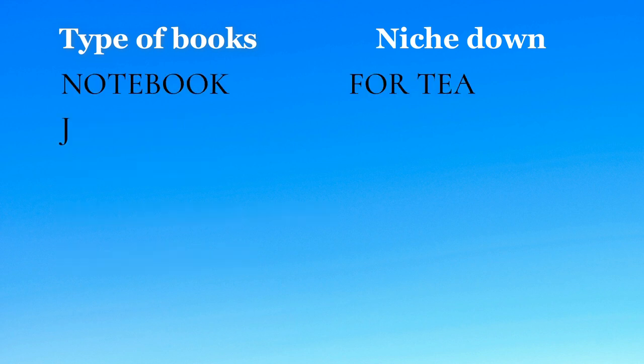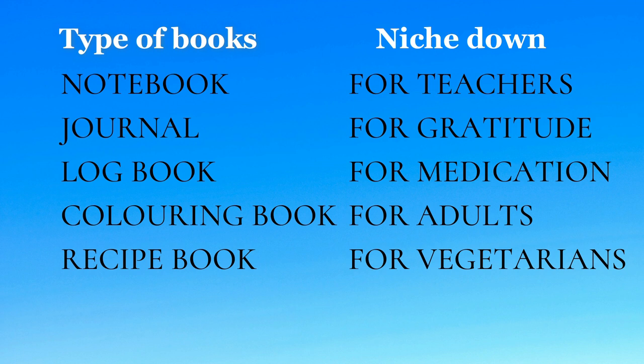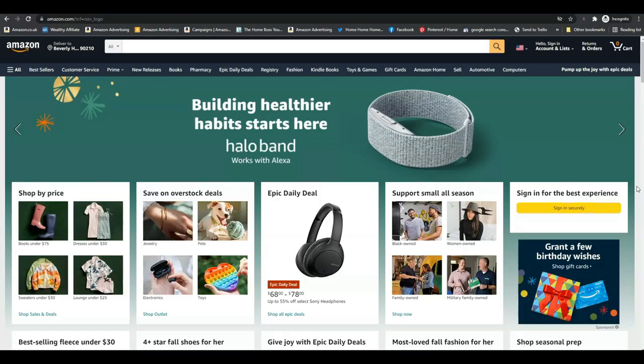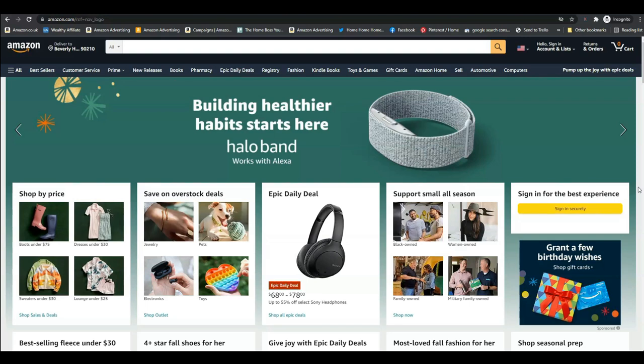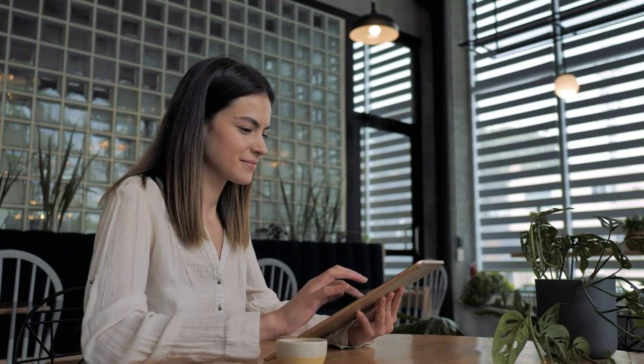For example, you could have a notebook for teachers, a journal for gratitude, a log book for medication, a colouring book for adults, a recipe book for vegetarians. The more you divide the niche into subsections the better because you are cutting out a lot of the competition. If you type in notebooks into Amazon you get thousands of results, but notebooks for teachers is slightly better, and if you can niche down even more, even better.